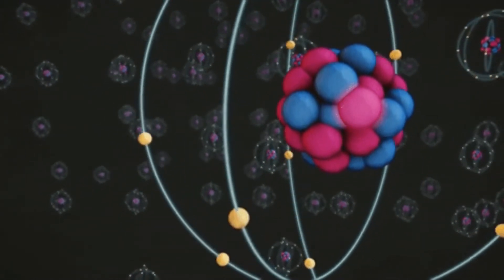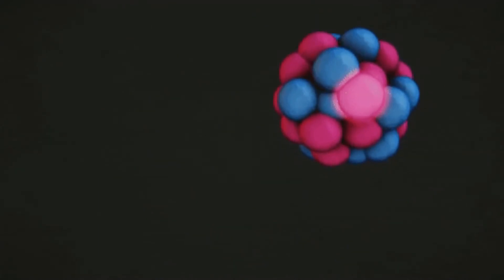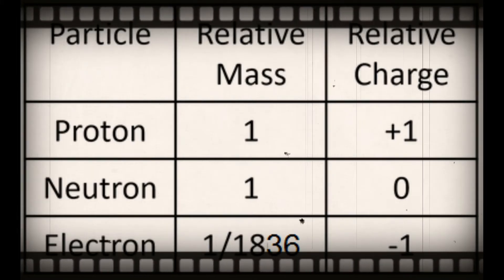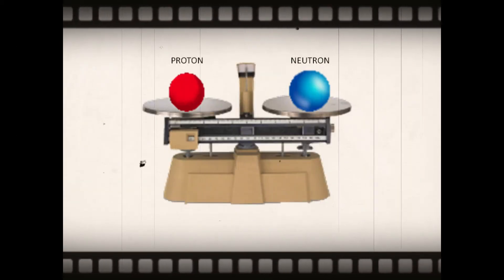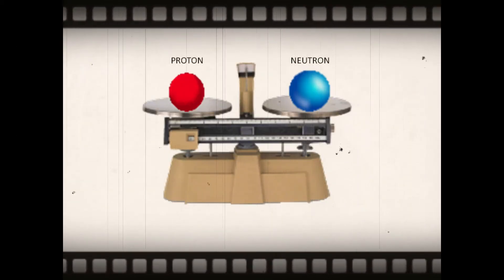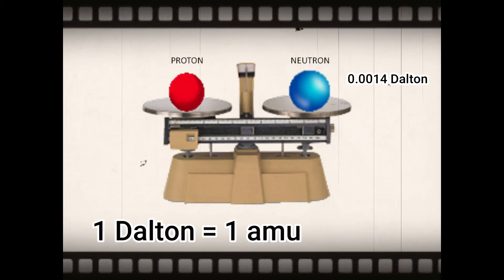Looking closely at the mass for the proton and the mass for the neutron, there are some similarities as many science texts will record them as having a mass of one dalton each. But in more detail, the neutron is slightly heavier than the proton by a value of 0.0014 dalton.